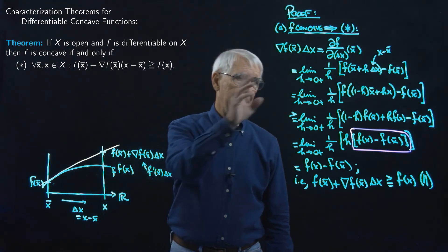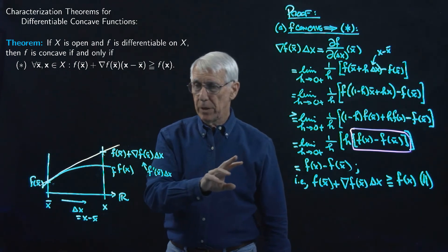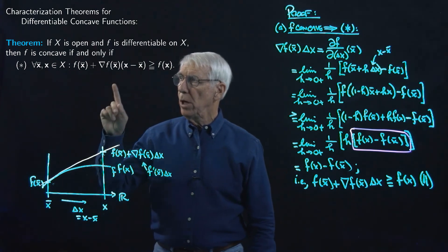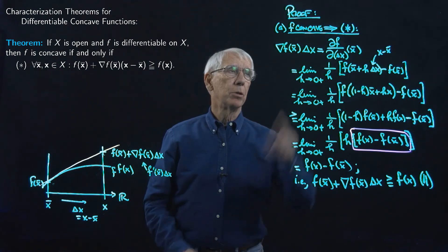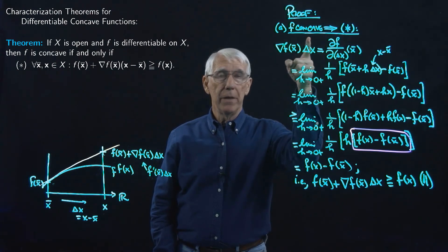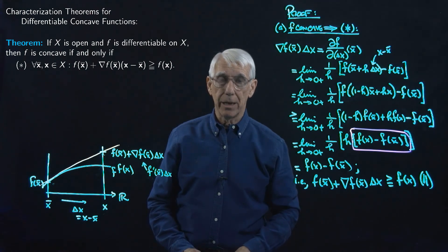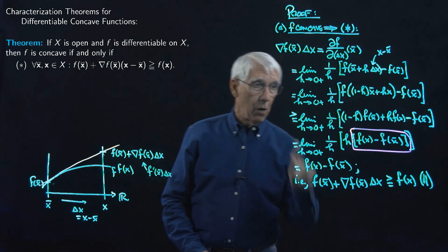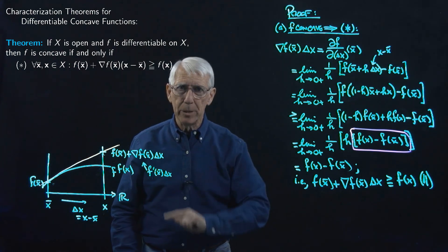Okay, so now we're going to have to take this off so we'll have enough space to prove the converse, to prove that if this star condition is satisfied, then F is in fact a concave function. So we'll take this off now, and we'll be back in just a moment.